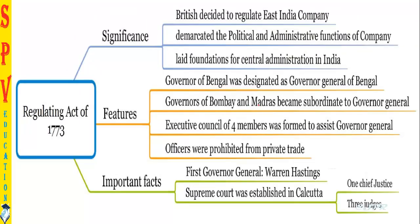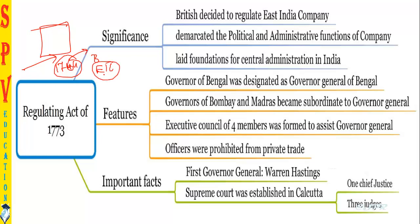Now we shall go into polity. Before going into polity, you must know modern Indian history. Study the starting phase of modern Indian history, then come to polity — it will be much easier to learn that way. After the Battle of Plassey in 1764, the power of the regional provinces went to the East India Company. It was not British direct rule — the East India Company started ruling our nation.